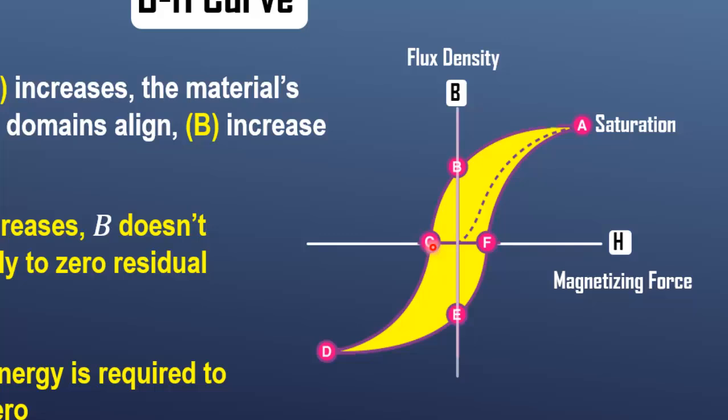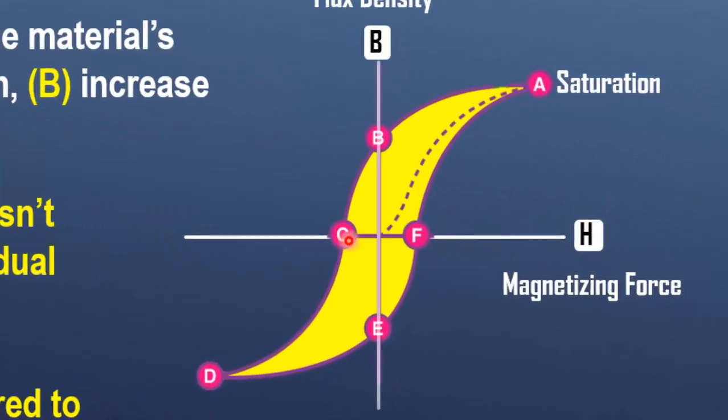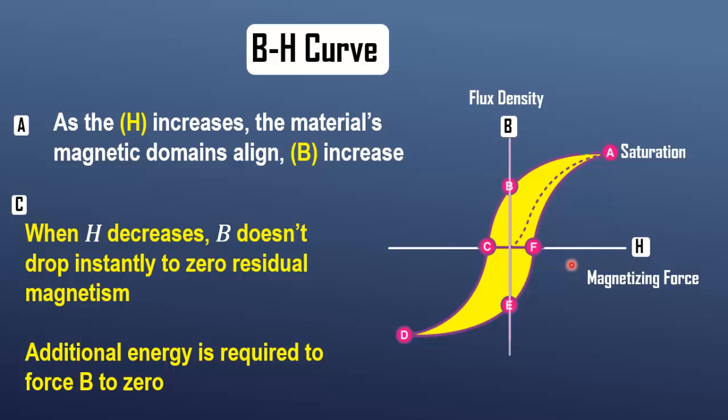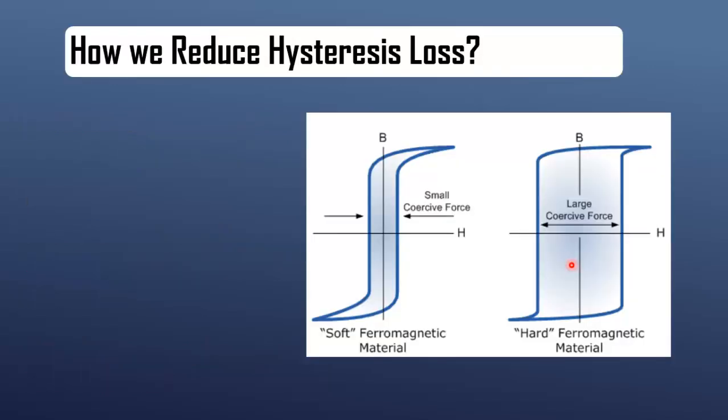Additional energy is required to force B to zero when magnetic field reverses direction. Also, more energy is required to align the domains during magnetization. Both energies contribute as heat loss, which is termed as hysteresis loss.